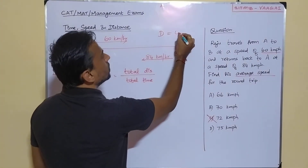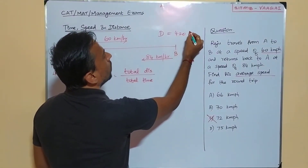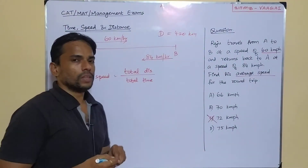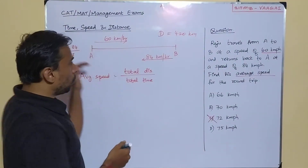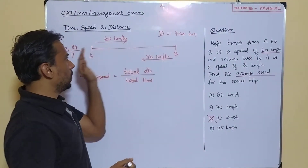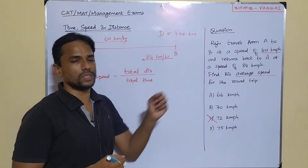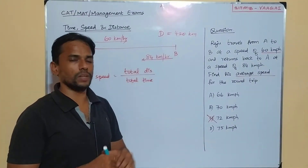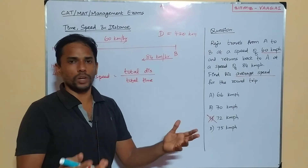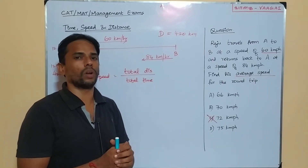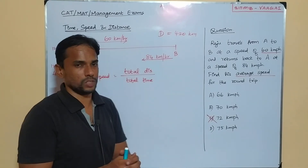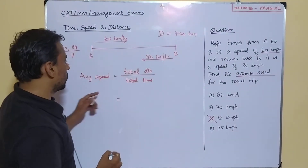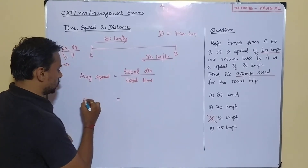We will take the distance to be 420 kilometers. This is the one-way distance — from A to B the distance is 420 kilometers, and again from B to A the distance is another 420 kilometers. Now we will calculate the average speed.